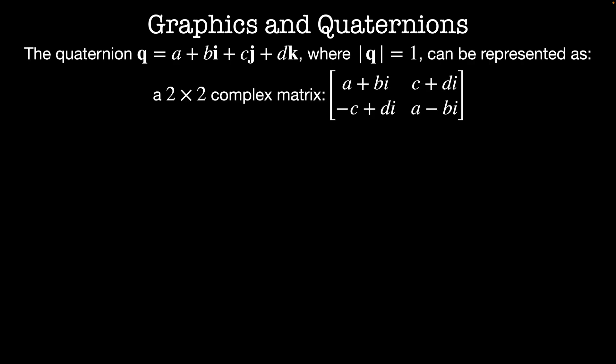We can express quaternions in this complex notation, or we can look at them as a group. The unit quaternion q equals a plus bi plus cj plus dk, where the absolute value of q equals 1.